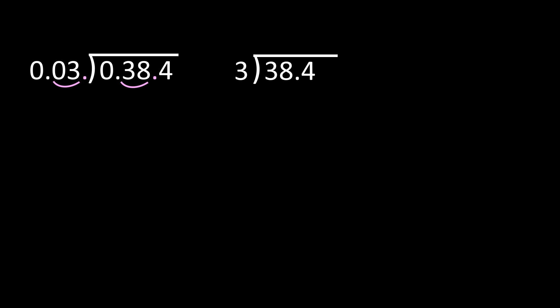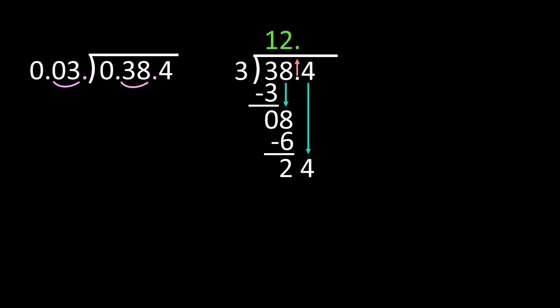Our first step is to take that decimal point and move it straight up so it's in the correct place in our quotient. Now we're ready to divide like normal. 3 divided by 3 is 1 — I'm going to place the 1 right above the 3. 1 times 3 is 3, and when I subtract, I get 0. Now I bring the 8 straight down. 8 divided by 3 is 2. 2 times 3 is 6, and when I subtract, I get 2. Now I'm bringing the 4 down — 24 divided by 3 is 8. 8 times 3 is 24, and 24 minus 24 is 0. So my quotient is 12 and 8 tenths.